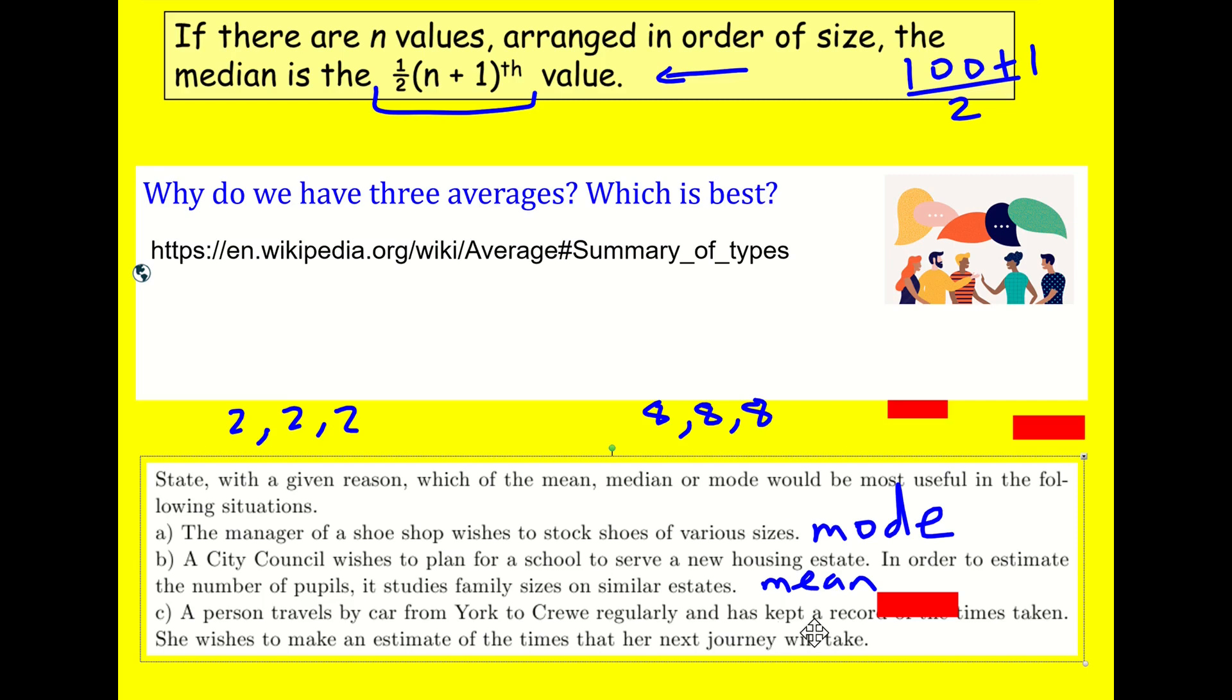And then finally, the last question about the time taken. Well, in this case, I would argue that the median is really good. We're not too interested in the most common time taken, but we need to be careful with outliers. So one day it might just take a really long time to get from York to Crewe. Maybe there were delays. Maybe they had to take an extra bus service. So we should really discount that. And if we want to estimate the next journey, we're not going to be affected by it. And we're going to use the median.